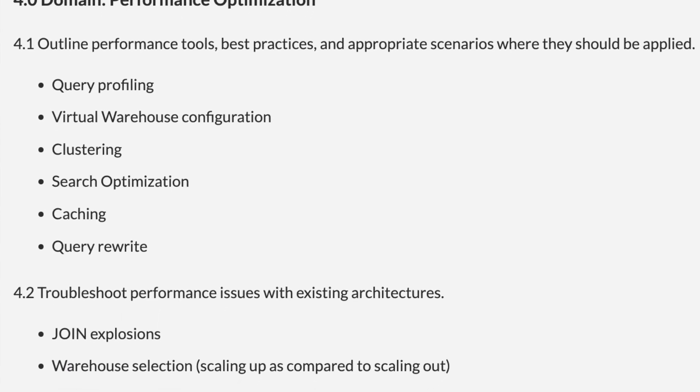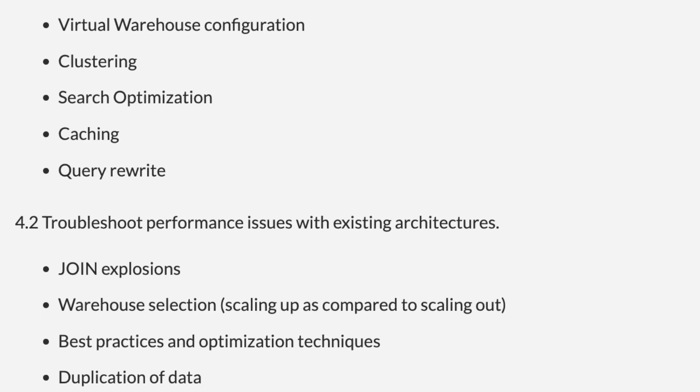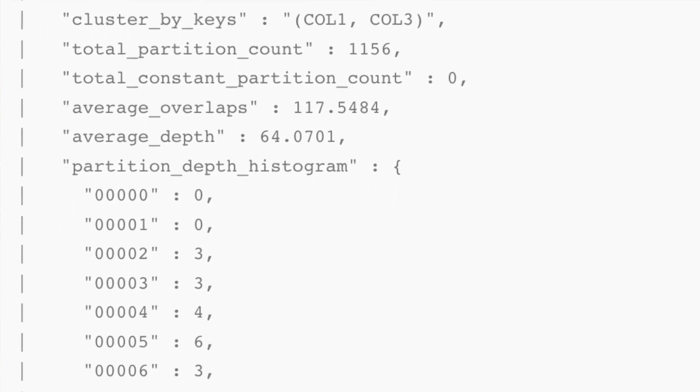Moving on to Performance Optimization — the last section at 25% of the domain. Understand clustering keys, and know where to go to check clustering information tables for average overlap depth. What does that tell you — is the table well clustered or not? How would you choose a good clustering key? Also cover caching: the three different types — metadata cache, result set cache and the warehouse SSD cache — what they're there for, how you would use them, the caveats around data going stale. Note that different virtual warehouses serving the same account can share the warehouse cache and help other queries returning similar datasets.